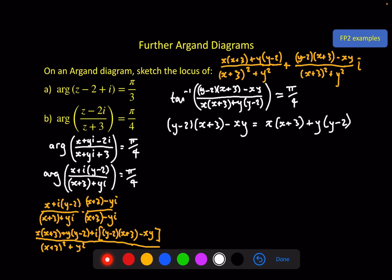Now we just expand everything out and simplify, hoping that this xy term disappears, because I don't want that in a circle equation. And we can see straight away it will: xy minus 2x plus 3y minus 6 minus xy is equal to x squared plus 3x plus y squared minus 2y. So by collecting everything and simplifying, that cancels with that. x squared plus 5x plus y squared minus 5y plus 6 equals 0.